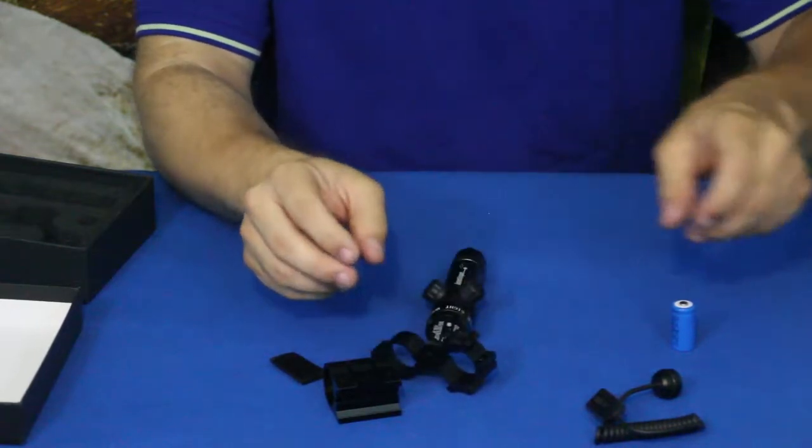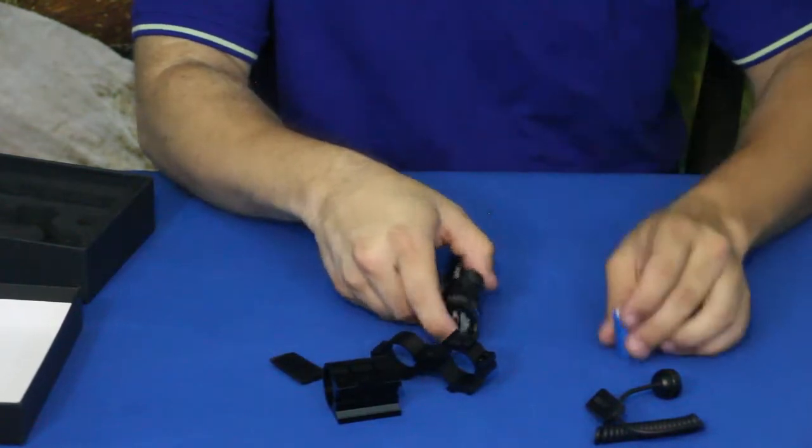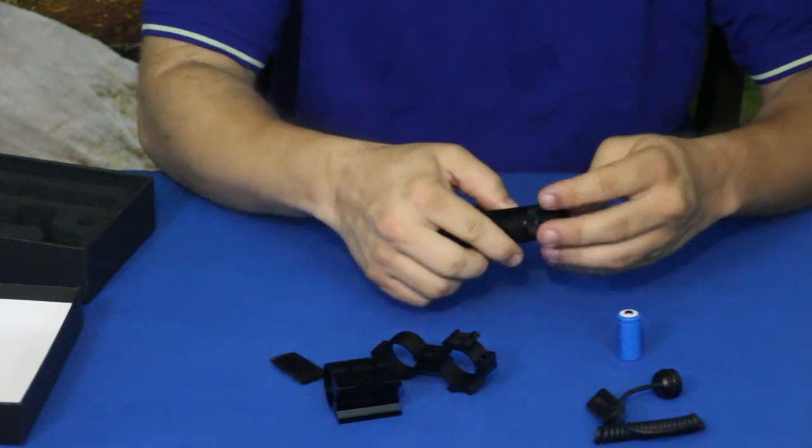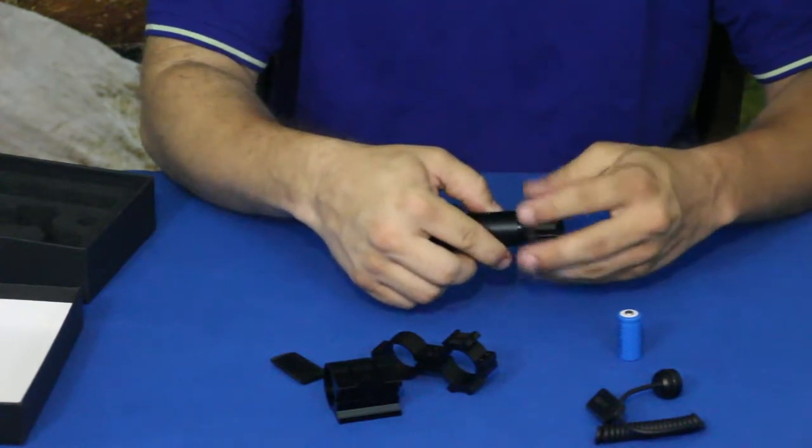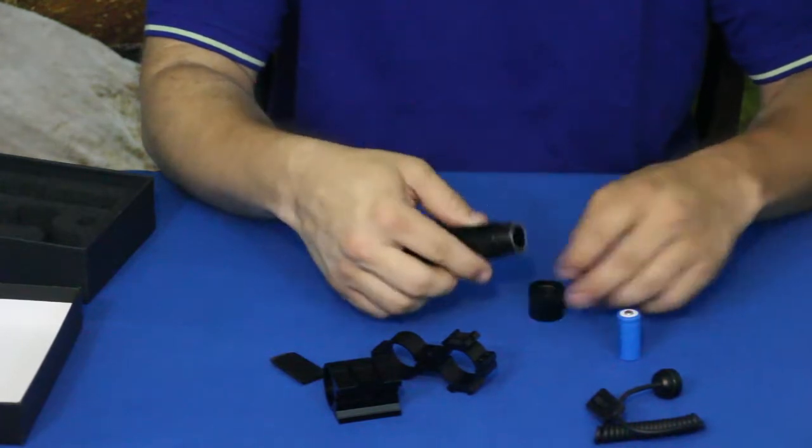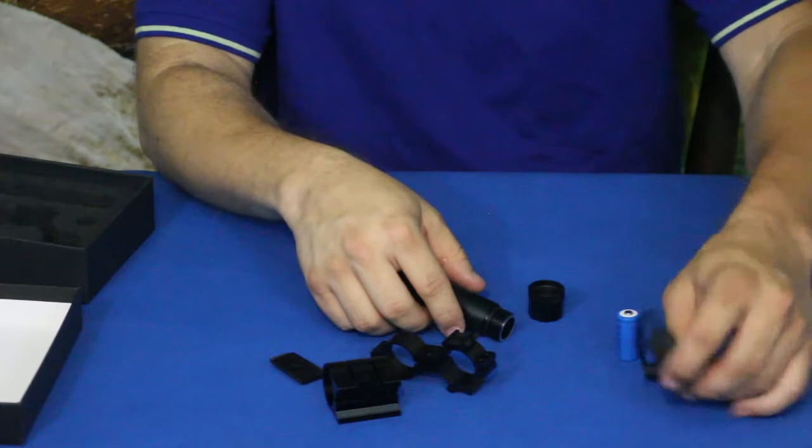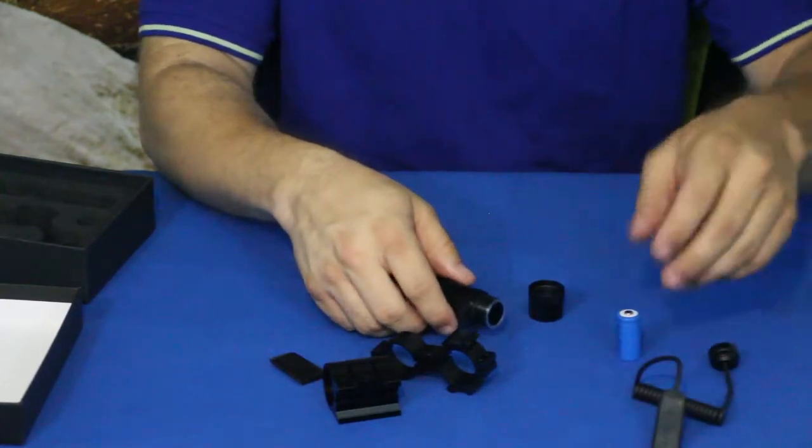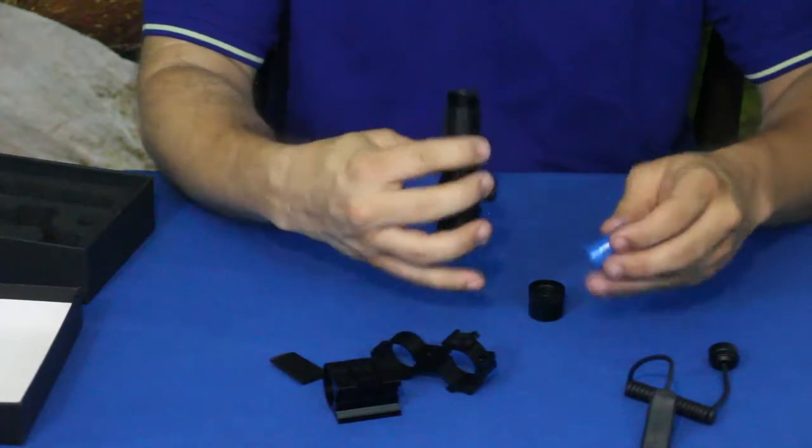It comes with the battery. It does have the push button feature here so you can just push it on and off. We also have the quick press or finger press button that you can put on your foregrip.